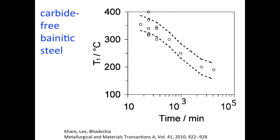These are experimental data on transformation temperature versus transformation time, and the dashed lines represent our mathematical models of this behavior. This shows that as the transformation temperature decreases, the transformation time increases quite dramatically.